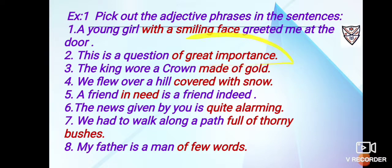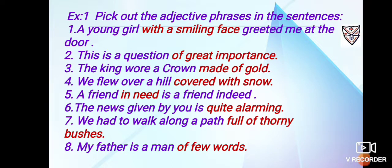Number three: 'The king wore a crown made of gold.' Which crown did the king wear? It's a golden crown — so 'made of gold' is an adjective phrase. Number four: 'We flew over a hill covered with snow.' What sort of hill was it? The hill was covered with snow, so 'covered with snow' is the adjective phrase — you can say a snowy hill.